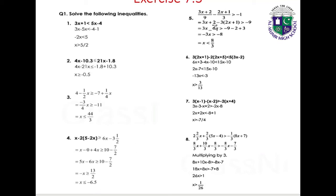Question 5: (3x plus 2)/9 minus (2x plus 1)/3 greater than minus 1. Multiplying by 9: 3x plus 2 minus 3(2x plus 1) greater than minus 9, giving 3x minus 6x greater than minus 9 minus 2 plus 3, so minus 3x greater than minus 8, therefore x less than 8/3. Solution: x < 8/3.